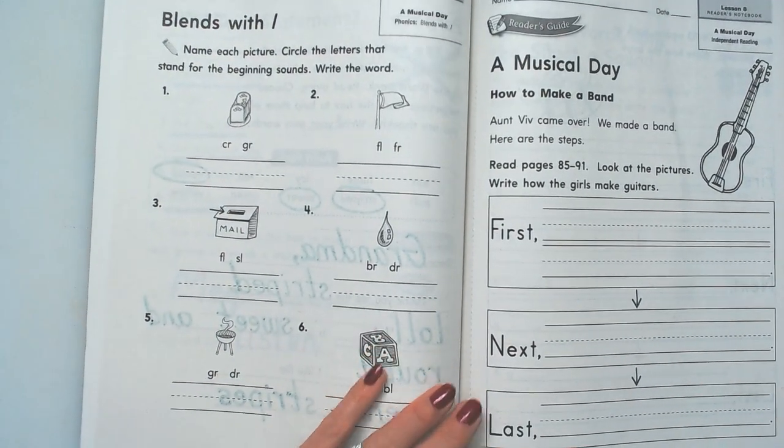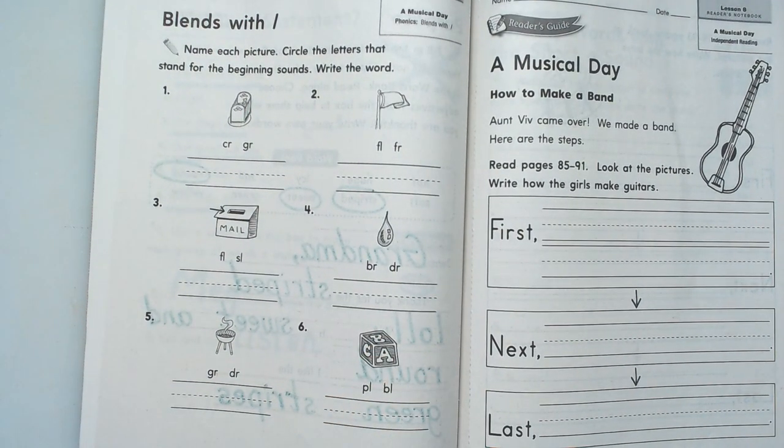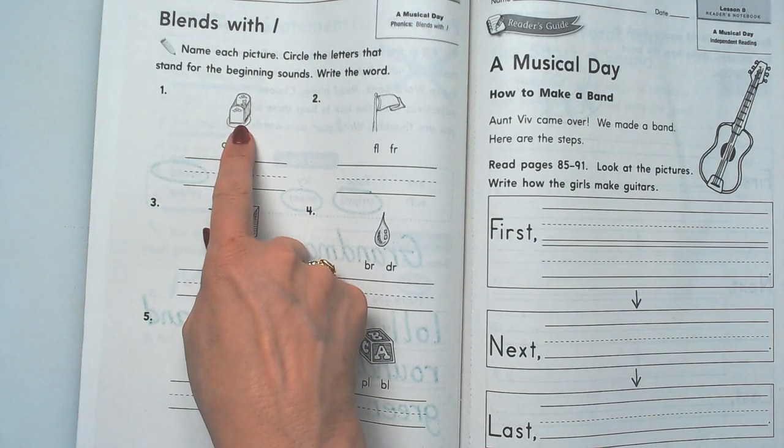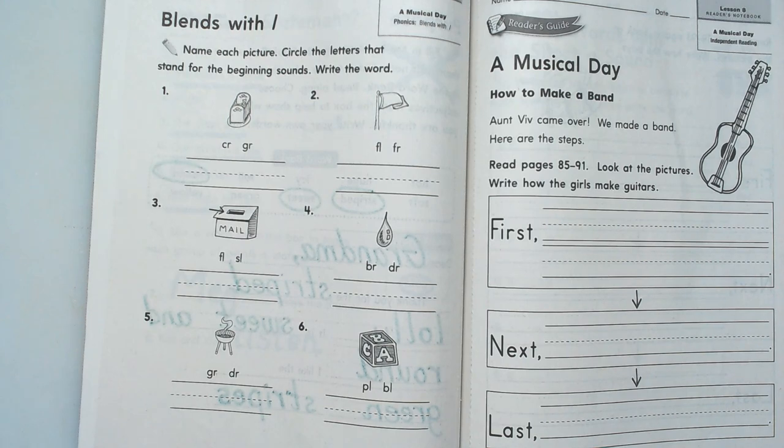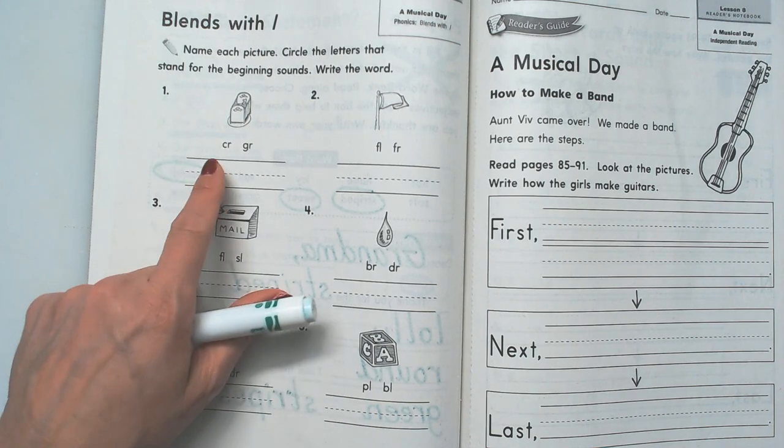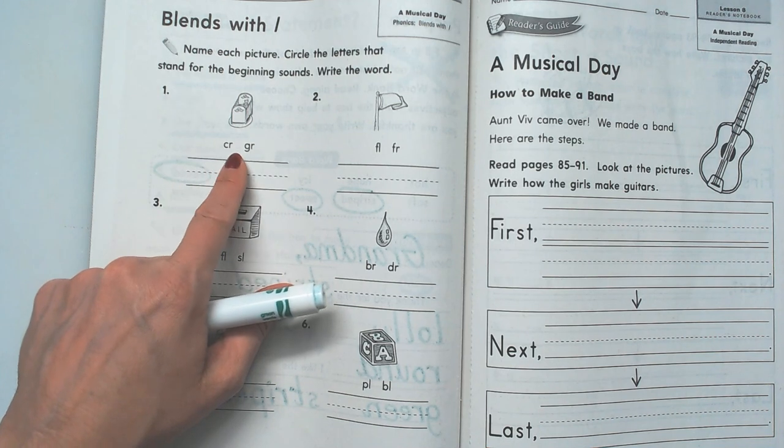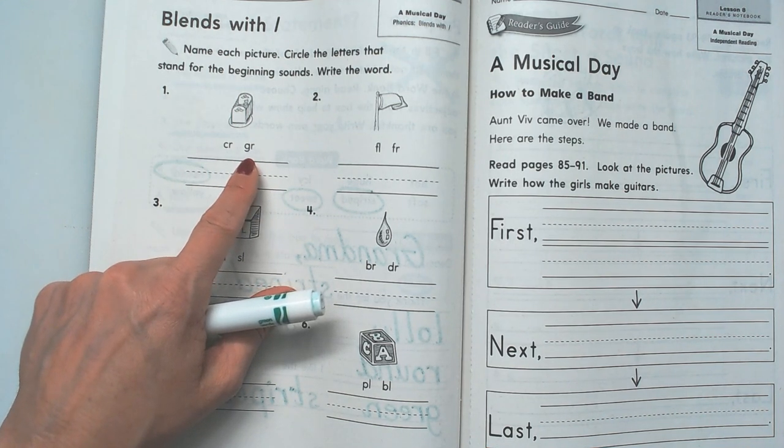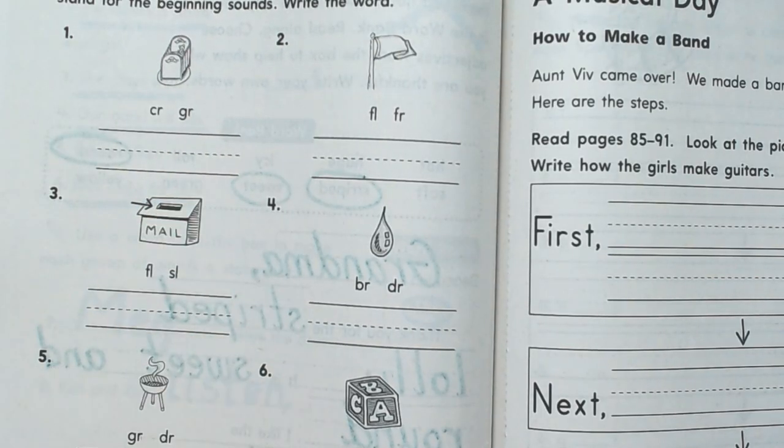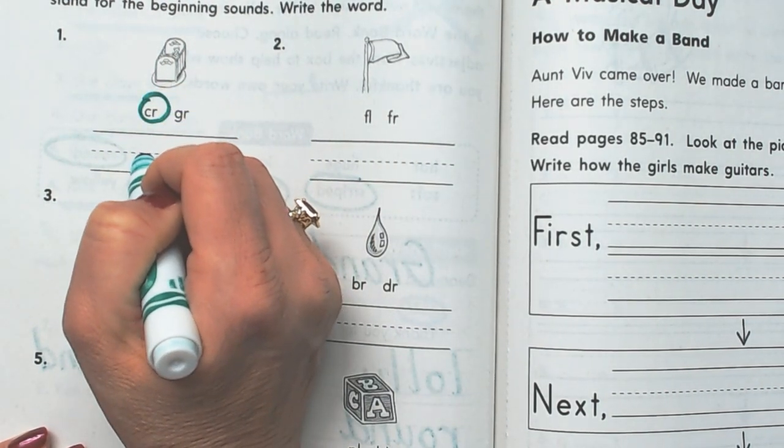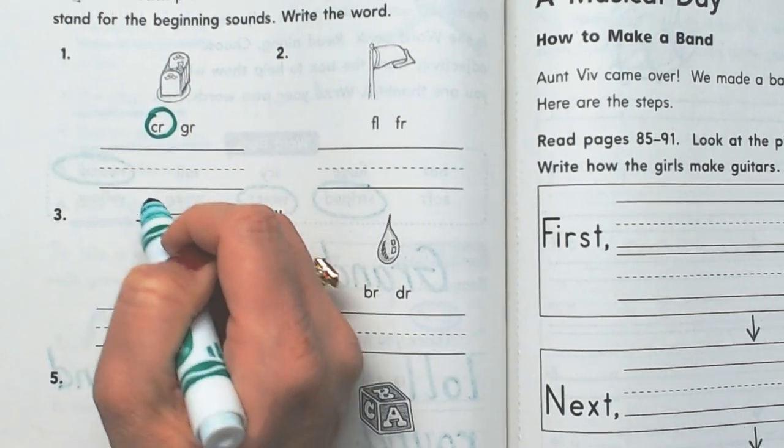So this is a crib, and which of those two blends, CR or GR, would you expect would make the sound in crib? Did you say CR? Okay, we just have to write the word crib now, so CR-I-B crib.